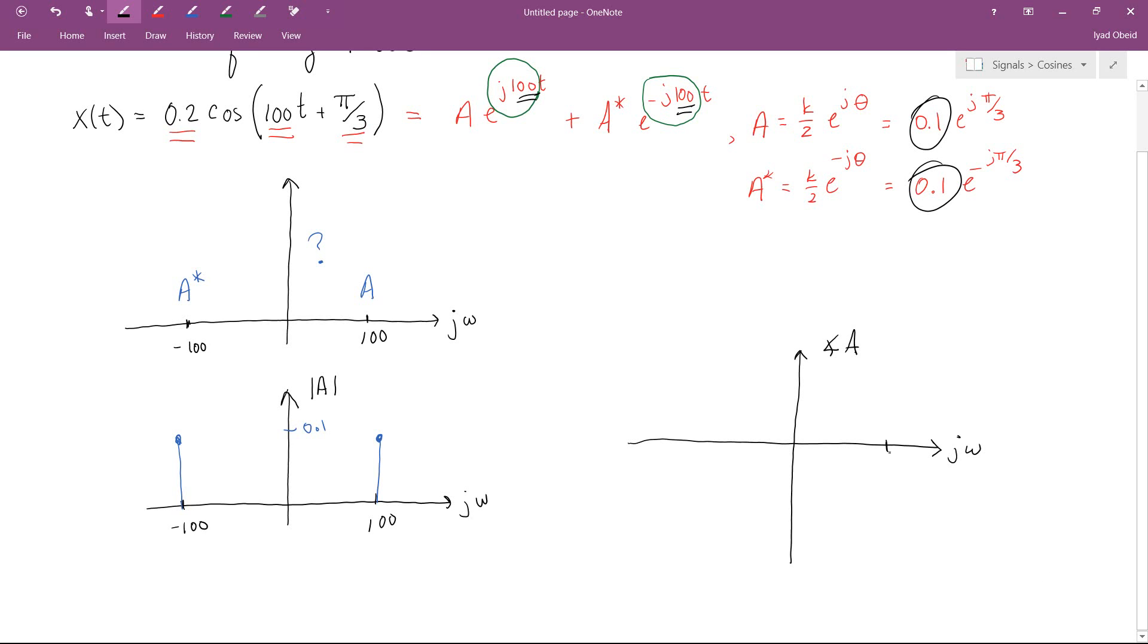And once again, we still have energy at 100 and at minus 100 radians per second. Now, at 100, we have the phase angle of pi over 3. So let's go ahead and draw that. Here's a little stick. We have energy of pi over 3. And at minus 100, which is A conjugate, we have a phase angle of minus pi over 3. So we'll draw it like that, minus pi over 3. And there we go.